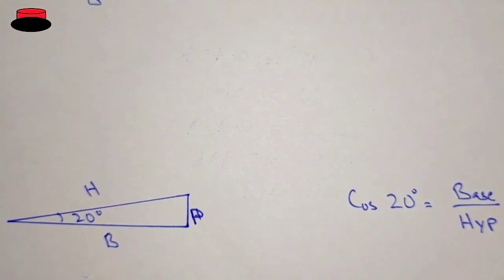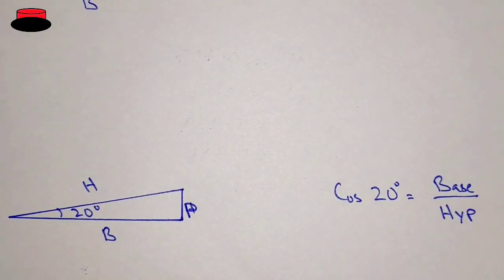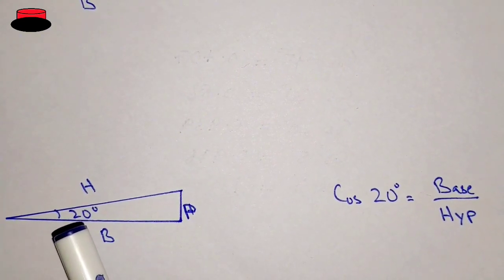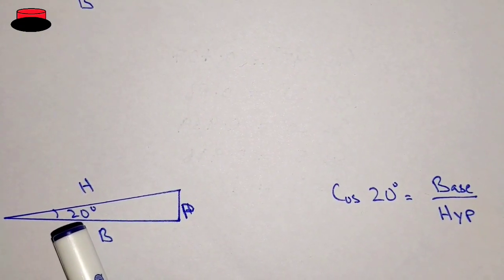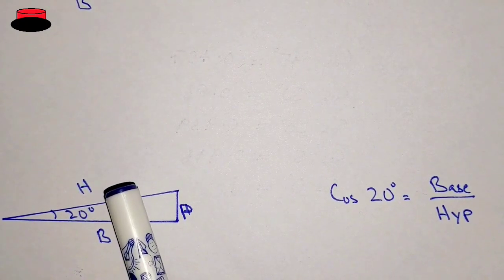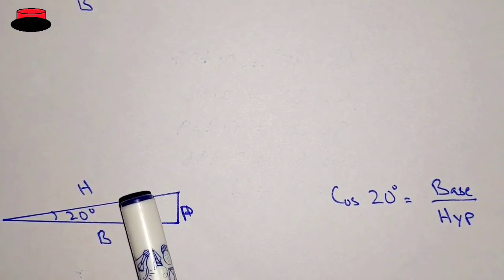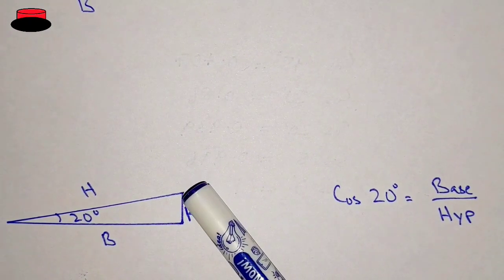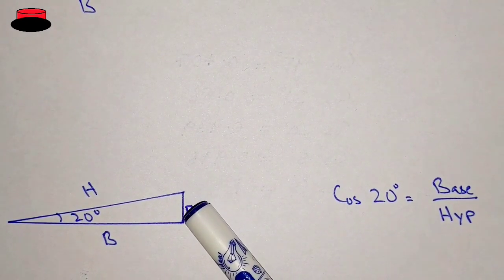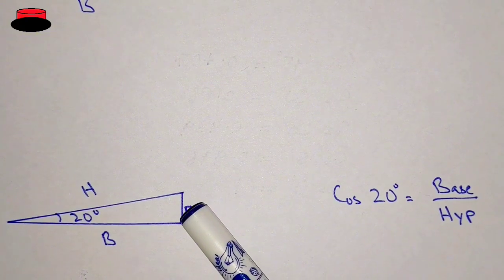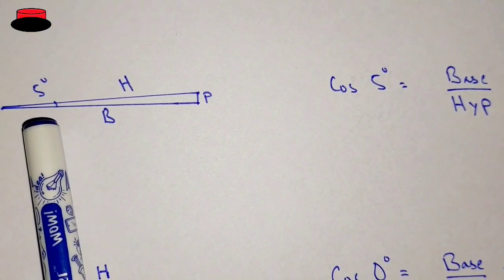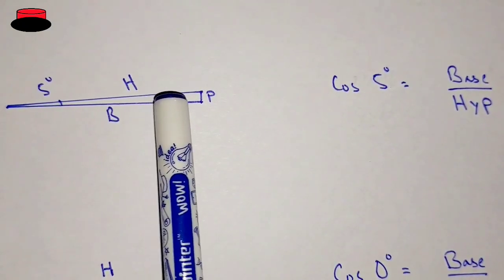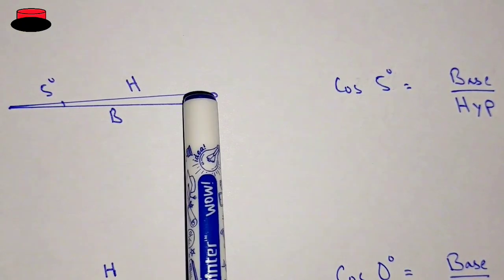Here you can see we are bringing the hypotenuse closer to the base, and the angle is now 20 degrees. As we decrease the angle, the hypotenuse comes closer to the base and its length also decreases. Keep decreasing until it reaches the base. Here the angle is only 5 degrees and the hypotenuse is just a little longer than the base.